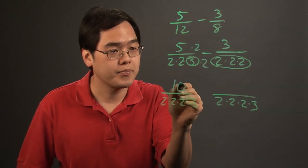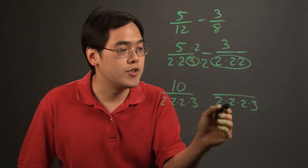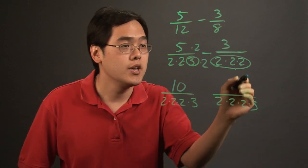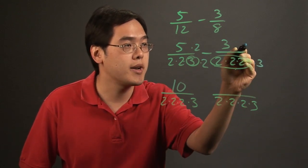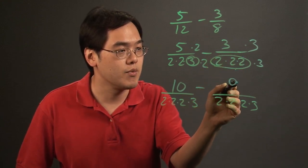So you have ten, and then this denominator to this denominator is missing a three, so multiply the top and bottom by three. Three times three is going to give you nine.